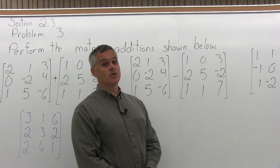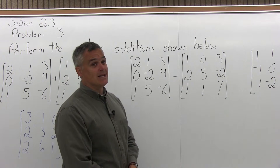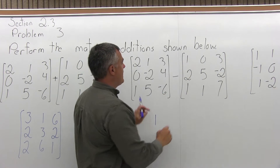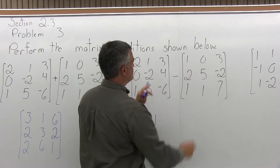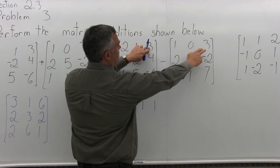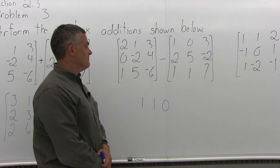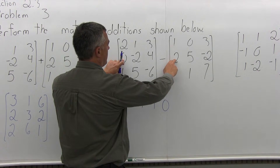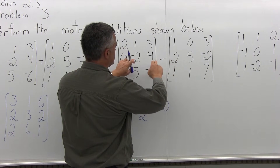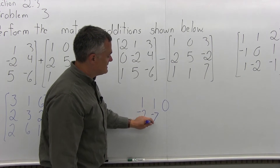So we're going to do the same thing except subtract the values in corresponding positions — it's the same process. Upper left minus upper left will be 2 minus 1, which will be 1. And then upper middle minus upper middle, 1 minus 0, will be 1. And then upper right minus upper right will be 3 minus 3, which is 0. And then coming across the middle row, left middle minus left middle, 0 minus 2 is negative 2. And then center middle minus center middle, negative 2 minus 5 will be negative 7.